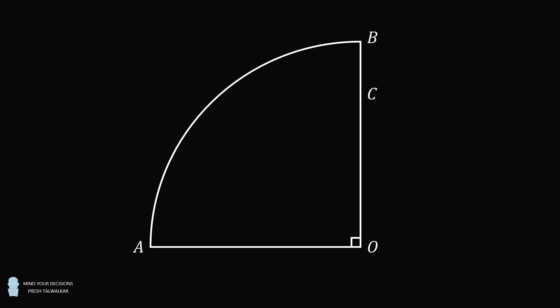Hey, this is Presh Talwalker. O is a quarter circle with radii OA and OB. Pick C along OB and pick D along the arc AB such that CDA is a 90 degree right angle. If CD is equal to 7 and DA is equal to 24, what is the length of OC equal to?